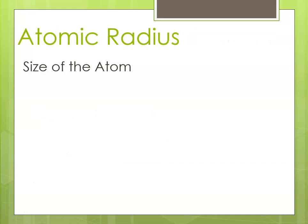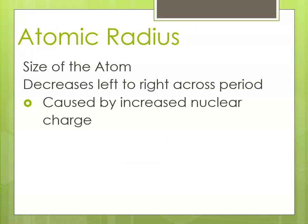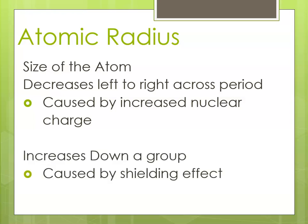Starting with atomic radius — it is the size of an atom. The radius decreases from left to right across a period because of the increased nuclear charge, and it increases down a group because of the shielding effect. When explaining why a periodic trend occurs, the key causes are typically nuclear charge and shielding.